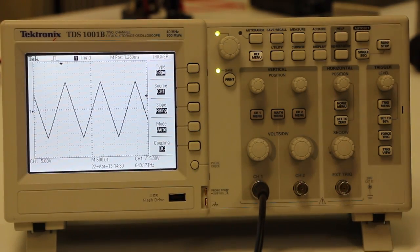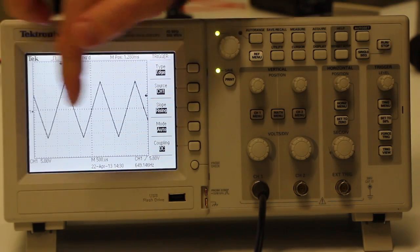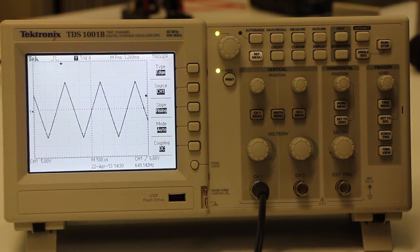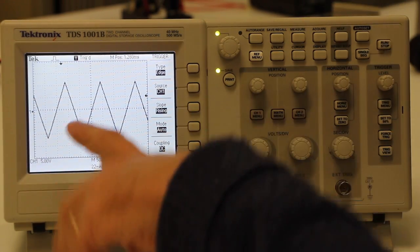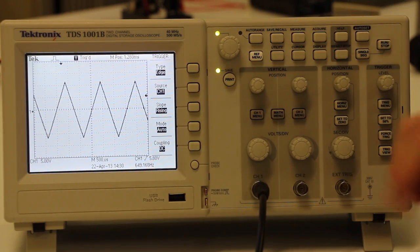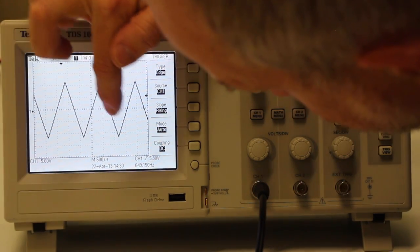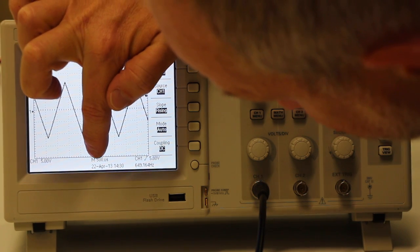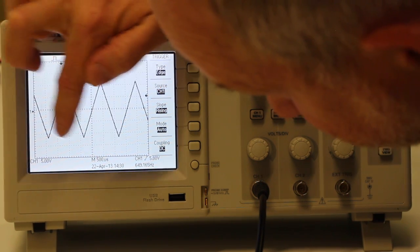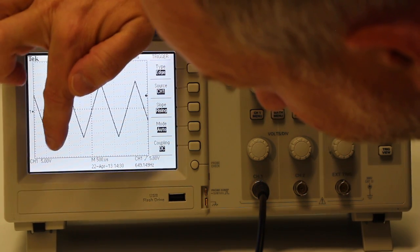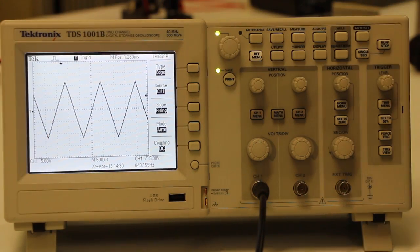I would now like to show you how to actually measure numbers off one of these plots. You can just measure a plot by eye, bearing in mind that each of these boxes is 500 microseconds in this case, and each vertical interval is 5 volts, whatever it says in this corner over here.